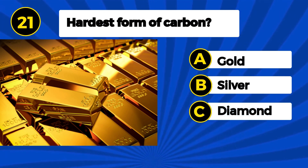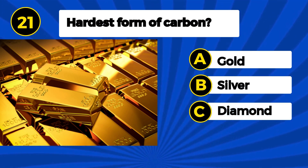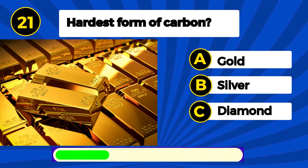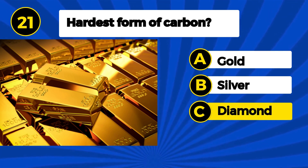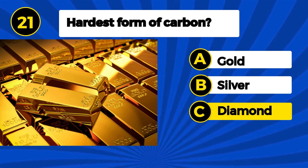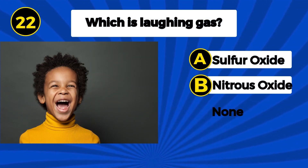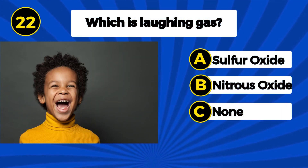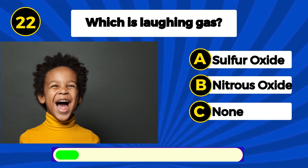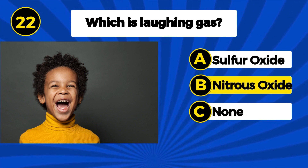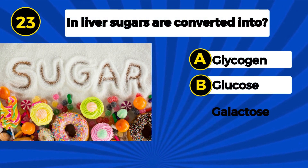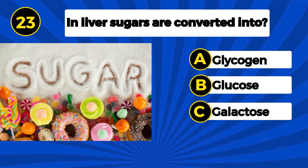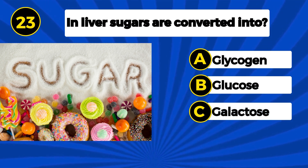Increases. Hottest form of carbon? Diamond. Which is laughing gas? Nitrous oxide. And liver sugars are converted into?